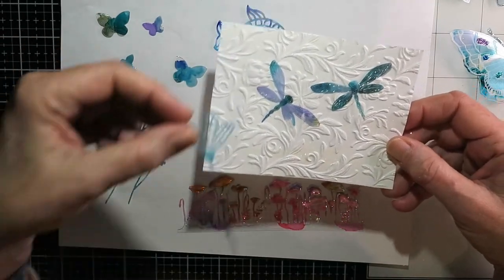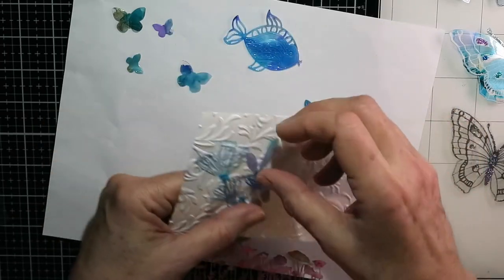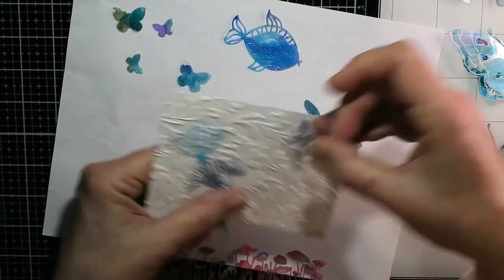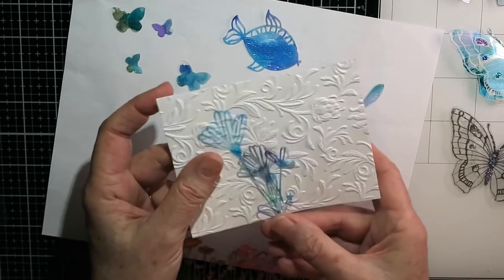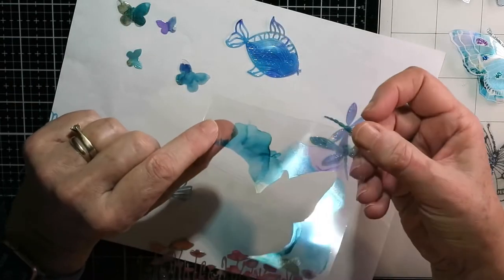Now, those dragonflies are from Simon Says Stamp, and those are Pinkfresh. I think that was Dainty Blossoms from Pinkfresh, those ones there. And I just put them against that embossed background.